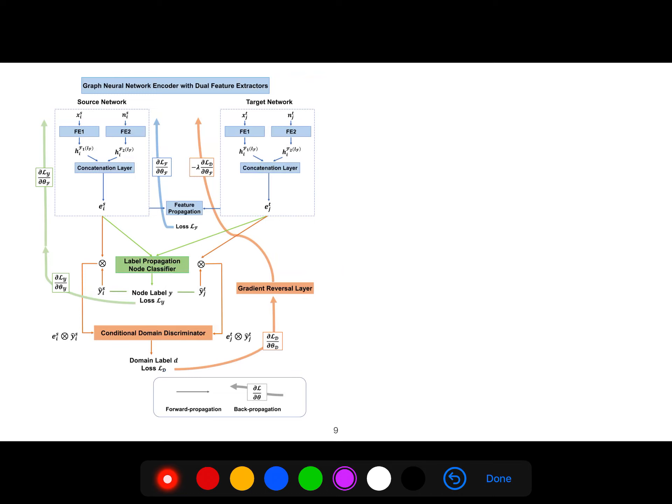Like before, we have source network and target network, but each one has different feature embeddings: feature embedding one, feature embedding two. Even for target, feature embedding one, feature embedding two. Then we concatenate them here, we concatenate them for both source and target, but we have a feature propagation. The rest of that is just that adversarial approach from that popular article in 2017 or 18, 2017, that uses gradient reversal layer and that conditional domain discriminator. So the rest of that is very standard.